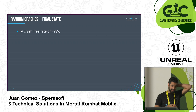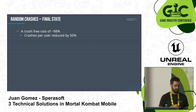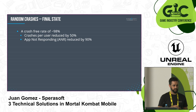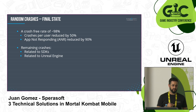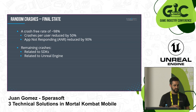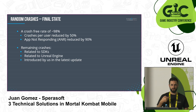The final state: we reached a crash-free rate of 98%. We reduced crashes per user by around 50%. We also reduced app not responding (ANR) events by 90%, which is a very important metric. What we have left to continue working on is mostly related to SDKs and Unreal Engine bugs — that's why you want to keep them up to date if possible. When you start modifying the engine, it becomes harder and harder to update. That's why it's important to have a crash reporting tool that will tell you when you introduce a new bug.